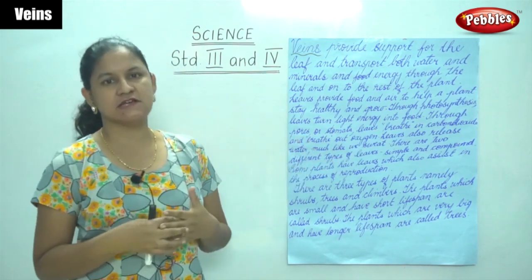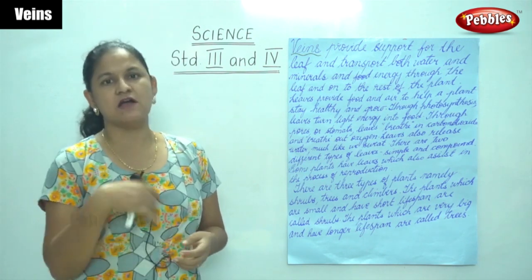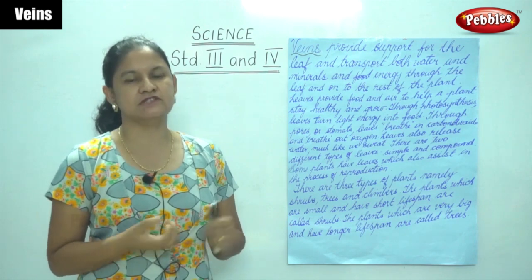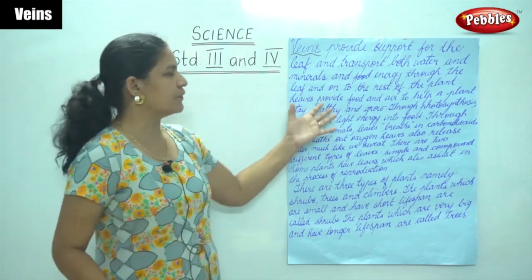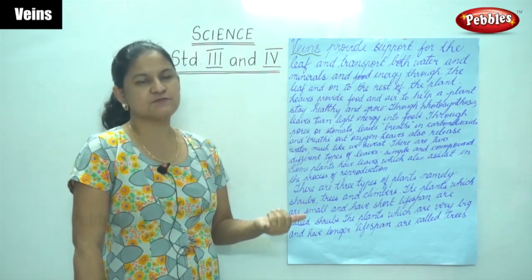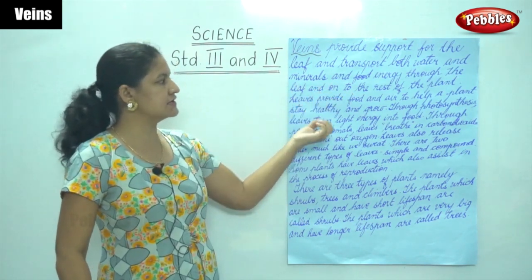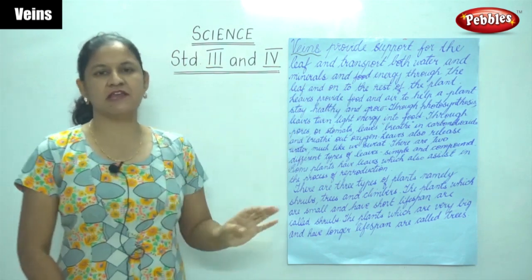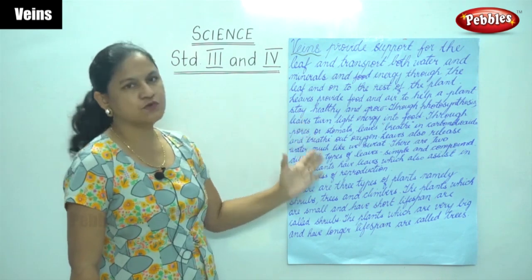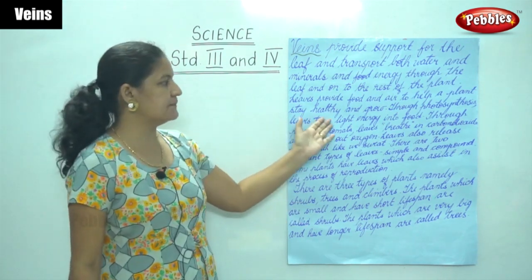The oxygen that is given out by the leaves or by the plant is used by humans and animals to breathe. So veins provide support for the plant and transport food, water, and minerals through the leaf to the remaining parts of the plant. Leaves provide food and air to help a plant grow healthy.